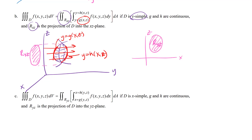For part C, if the region is x-simple, we put dx on the inner integral. The lower limit is where you enter the region and the upper limit is where you leave when going in the direction of increasing x. The r-yz is the projection of the three-dimensional solid into the yz plane. Basically you get the inner integral set up and then go to a two-dimensional picture.